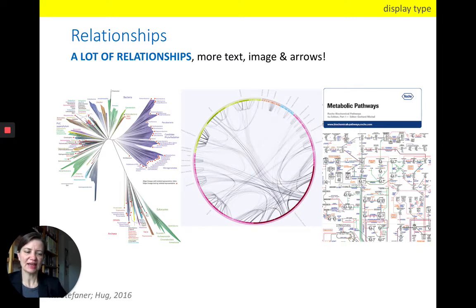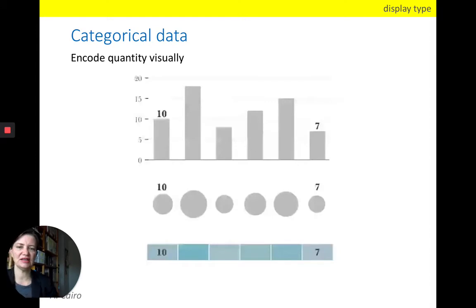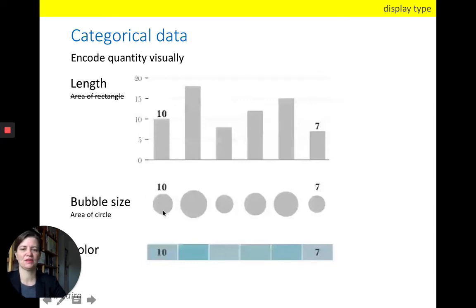So the next category that we are discussing now is categorical data. So here we want to encode a quantity somehow visually. There are three possibilities that we usually have. First is that we can encode the quantity by length, as it's the case in the uppermost example here. So what we see here is a vertical bar chart. The horizontal bar chart works exactly the same way. An alternative is that we encode the quantity not in the length of a bar, but actually in the area of a circle or bubble. So in this case, the quantity is displayed by the area of the bubble, and that is much harder to see visually than the length.